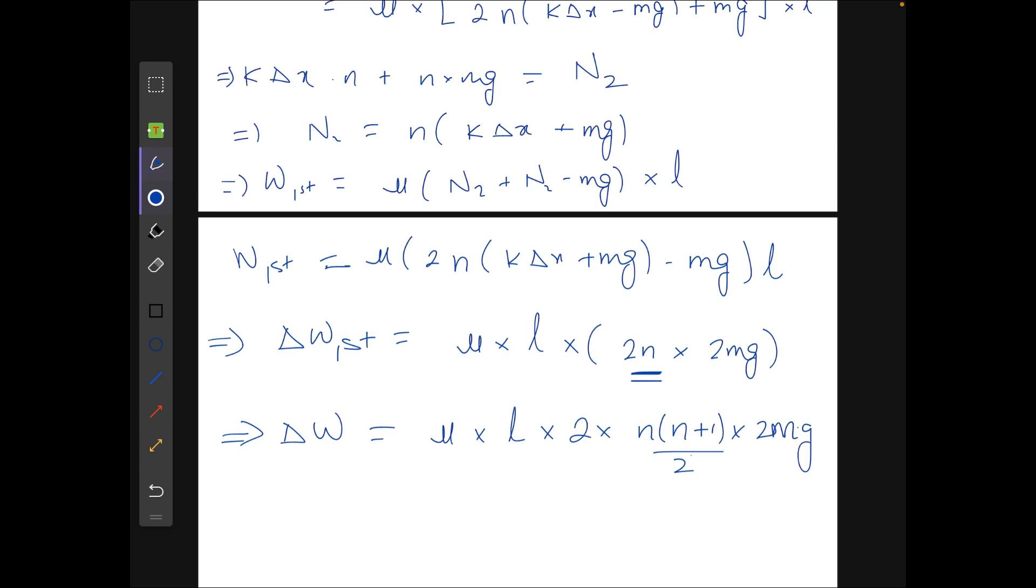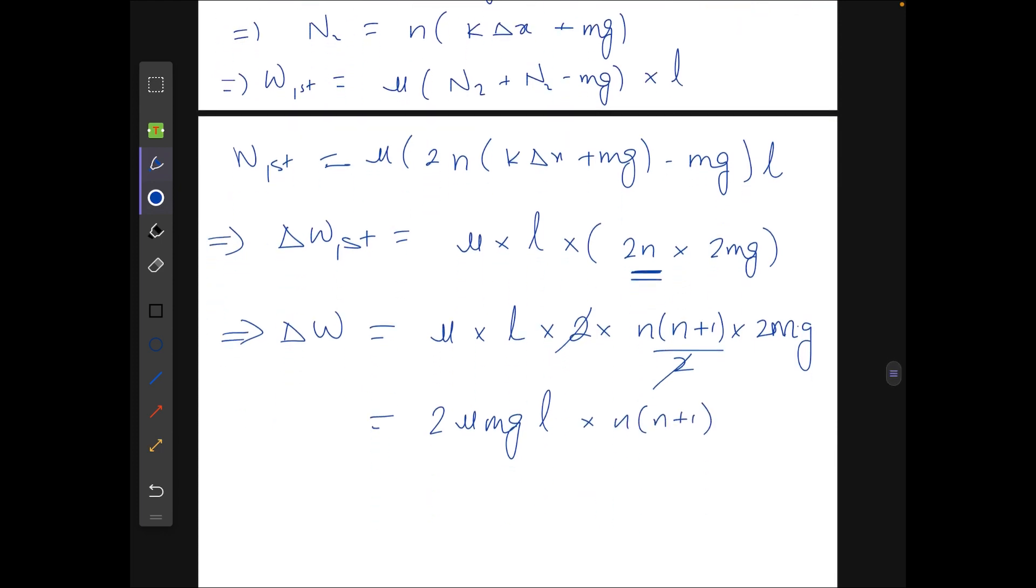So this is the difference in the work in the two cases. So we get from here 2 mu mgl into n times (n+1). And this is given to be delta w. So from here we get that mass of each plate equals delta w divided by 2 mu gl into n into (n+1).